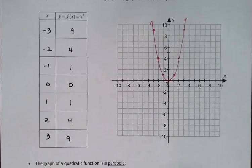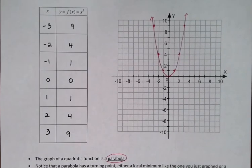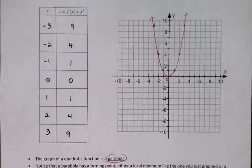That graph has got a name. It's called a parabola. And the graph of any quadratic function will turn out to be a parabola. It will be that basic shape with some variations that we're going to talk about.